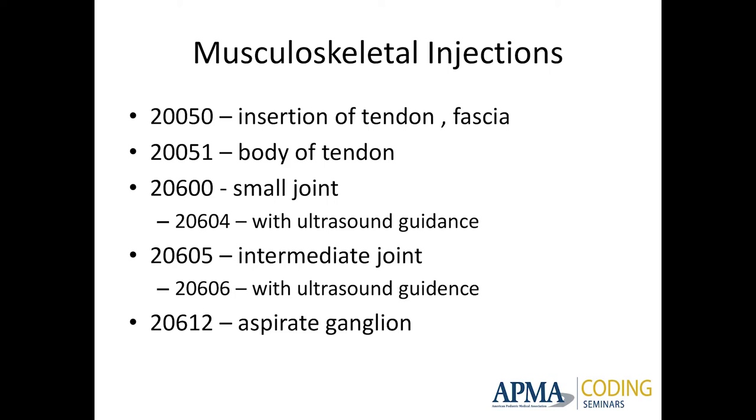20612 is aspirate ganglion — doesn't matter where it is. If you think it's a ganglion cyst or mucoid cyst and you're going to aspirate it, that's the code to use. Question: if billing the 20604 or 20606 joint injection with ultrasound guidance, do you need a separate ultrasound report and procedure report? The answer is no — you can combine them into one report, but you need to say you visualized the joint with ultrasound using a specific megahertz. You don't get two codes — just one report, one code.